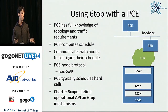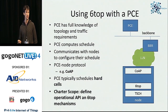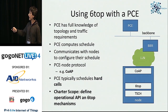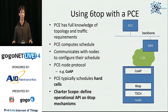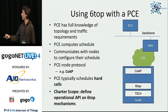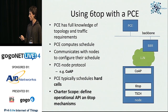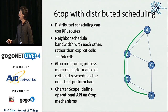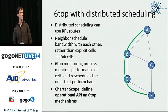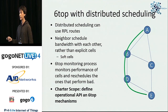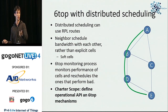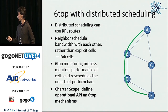In the centralized case, a PCE computes the network schedule and sends that configuration via CoAP through the backbone router to each node. When the CoAP packet reaches a node, it calls the 6top API, and 6top takes care of configuring TSCH. In the distributed case, a node with a bandwidth requirement — say, sending three packets per minute — tells the 6top layer to ensure that capacity. Then 6top installs the required cells in the schedule and negotiates with the neighbor so both agree on the shared slot. There are also mechanisms for monitoring and reacting to bad links.